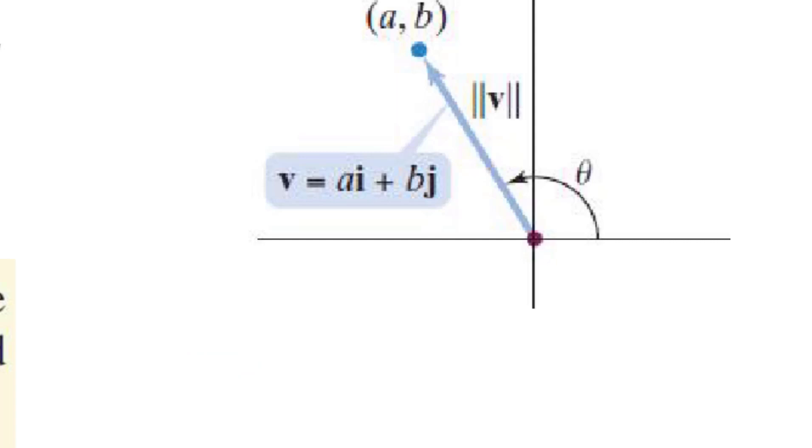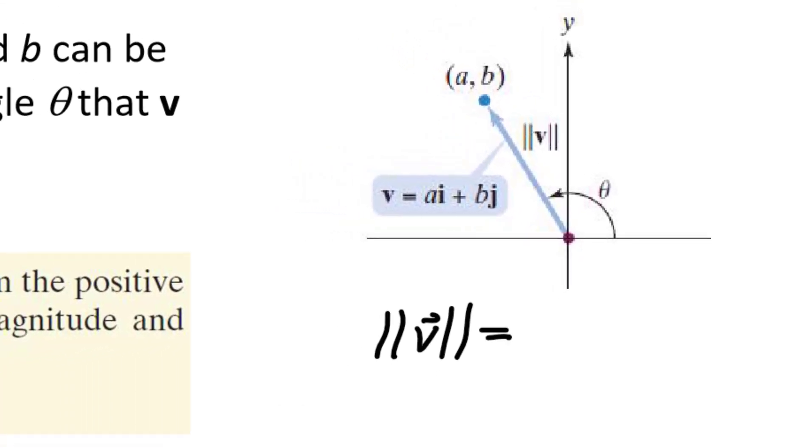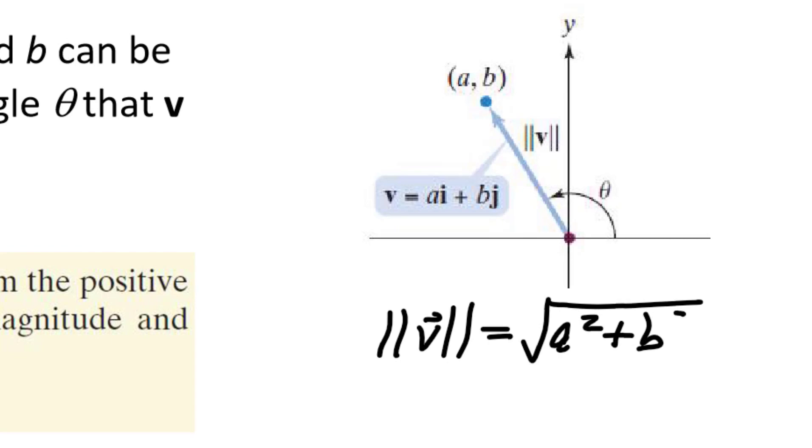We've also talked about how to find the magnitude of the vector. The magnitude, or norm, of a vector v is going to be the square root of the sum of the coefficients of i and j, a squared plus b squared. This makes sense because what we have here is a right triangle, so the Pythagorean theorem applies. The norm, or magnitude, is the length of the hypotenuse.